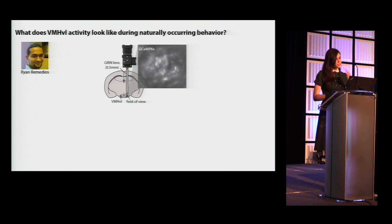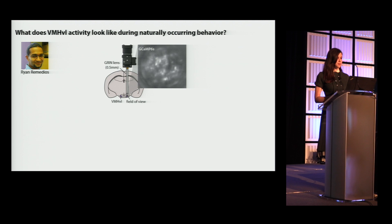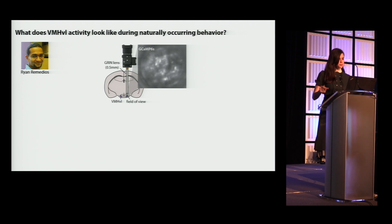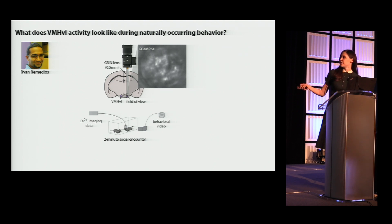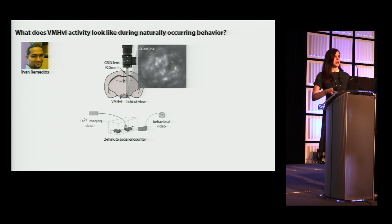The data I'm going to discuss was collected by Ryan Remedios, a postdoc in the Anderson Lab. He performed microendoscopic imaging in VMHVL to ask what happens there during naturally occurring behavior. He implanted mice with a GRIN lens and microendoscope to image GCaMP fluorescence, then observed two-minute social interactions with conspecifics — placing a male or female into the animal's home cage and letting them interact. He did about 10 trials per day for three consecutive days.